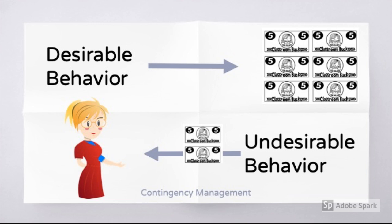Contingency management is an intervention that includes a set of consequences that are contingent on a specific set of behaviors. When students are doing what they're supposed to, they get positive reinforcement to increase the frequency of those behaviors. So when students are on task doing their work, they might get classroom bucks, but if they get off task, they might have to give some bucks back as a response cost. There's enough evidence from applied, in-classroom research showing that this strategy has positive effects on student behavior.